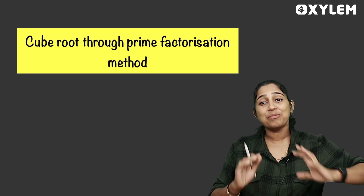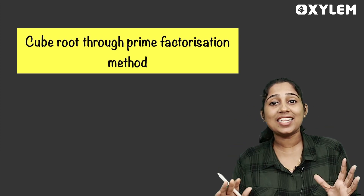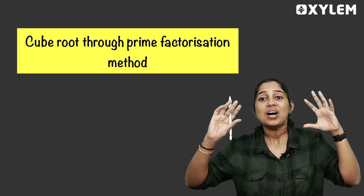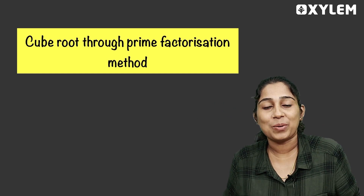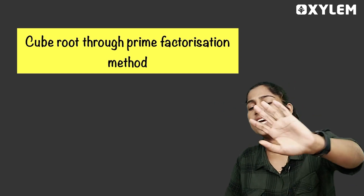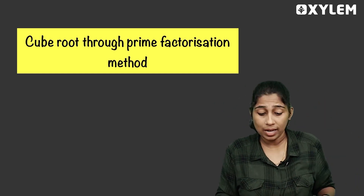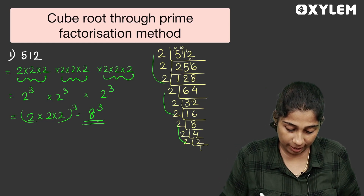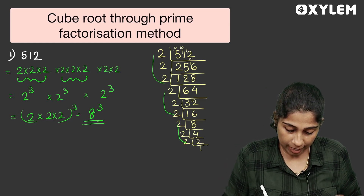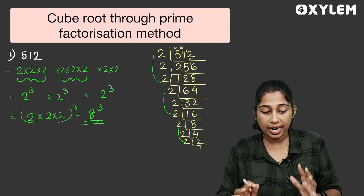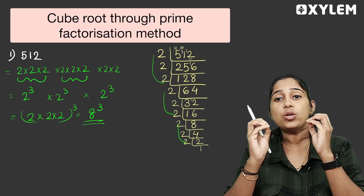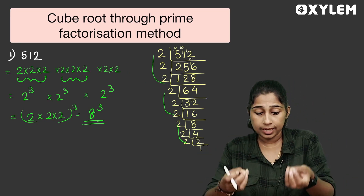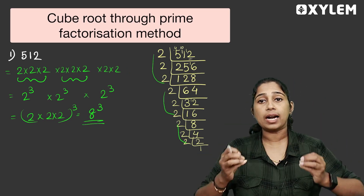If you want to know Prime Factorization, what are Prime Numbers? What is Prime Numbers? With the help of a question — our question is: find the cube root. I have a question here: this is 512. Where is the cube root? It is called Prime Factorization.